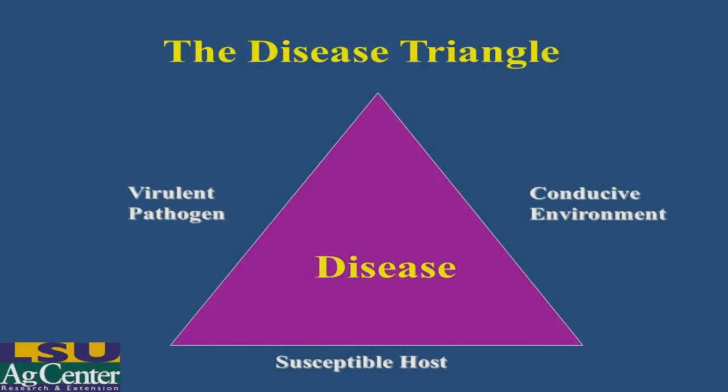Let's look at the concept of disease, starting with the disease triangle. The triangle is used because it is an easy way for us to define and look at the components of disease that have to occur at the same time. For example, we start with a virulent pathogen — in other words, a pathogen that is capable of causing disease.